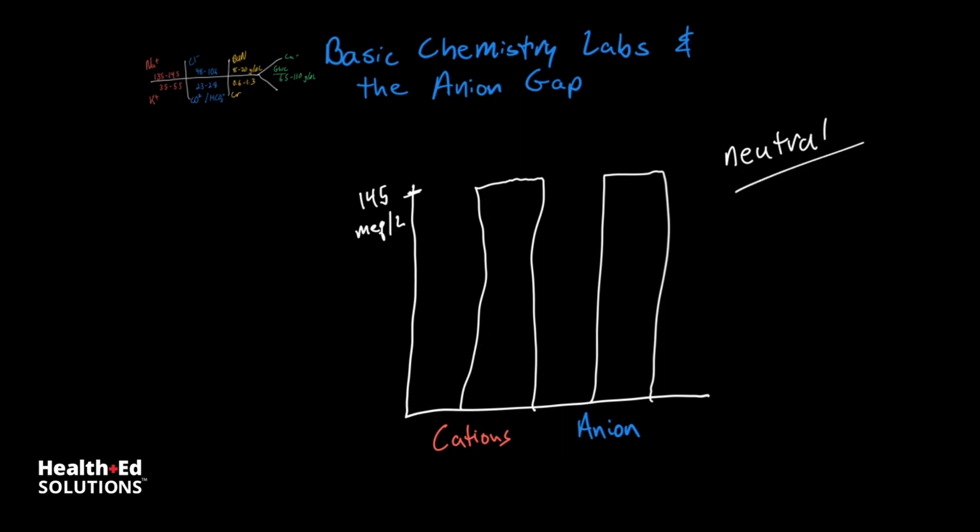So the anions and the cations usually will, the ones that we typically measure will come up to about 145 milliequivalents per liter. So we would have 145 milliequivalents worth of cations, 145 milliequivalents of anions, and that would preserve our electrical neutrality. So what happens though is, the major cation that we measure in serum is sodium. And the other cation that we measure in serum is potassium. So potassium is about 3.5 to 5 or so milliequivalents. And the sodium is around 140. So together we come up to our 145 milliequivalents per liter.